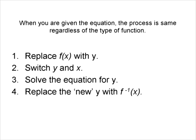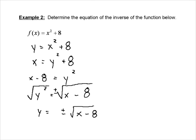Step four: replace the new y with f⁻¹(x). The function was originally called f(x), so our inverse is f⁻¹(x) = ±√(x - 8). There is our inverse.